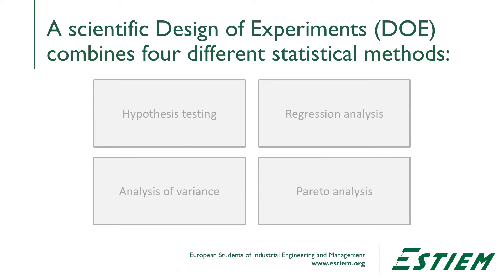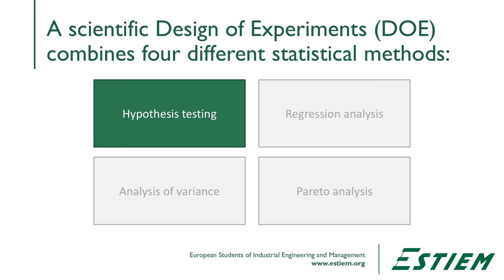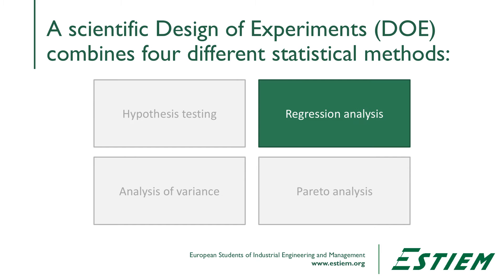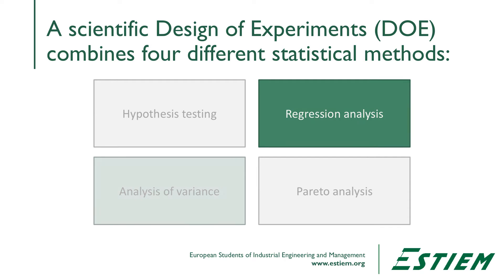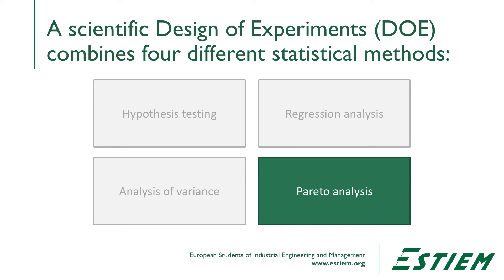Good news: there are no new statistics here. The designed experiment combines four basic statistical methods. Hypothesis testing describes which factors we'll evaluate for variation. Regression analysis calculates the difference between high and low settings of each factor. Analysis of variance describes the relative effect of variation within and between subgroups. And Pareto analysis shows the relative magnitude of the effects of change on the process by each combination.